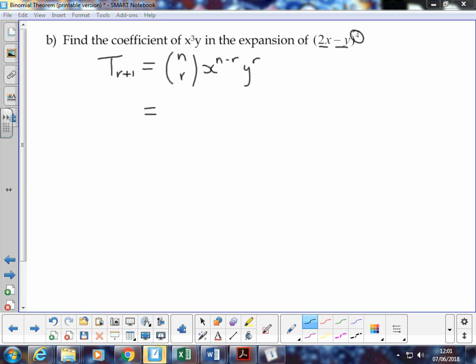We have n taking the value 4. So we've got 4 choose r. The first term in the bracket is 2x, so therefore we have to put 2x here to the power 4 minus r. Remember to put the 2x in the bracket and our second term is negative y to the power r.